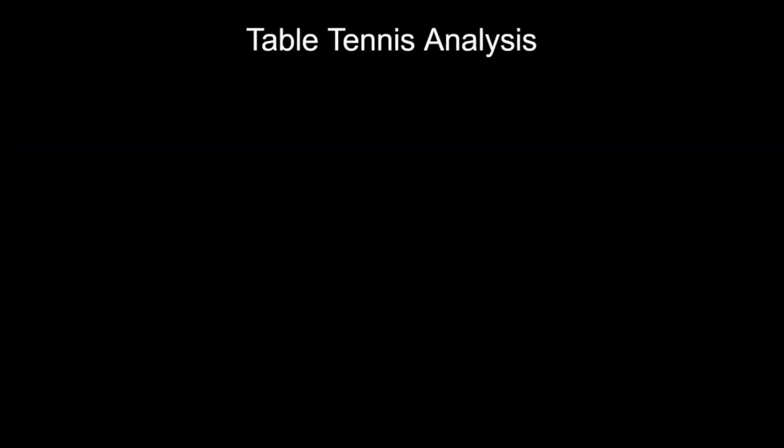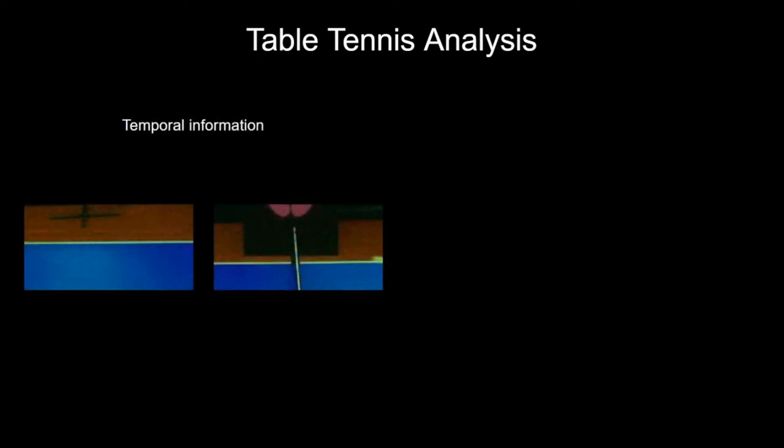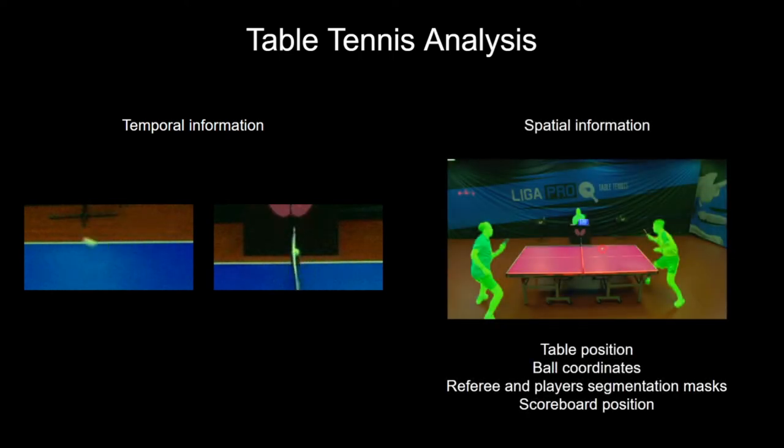Full analysis of table tennis requires two types of information to be gathered. Temporal information, providing data about in-game events like ball bounces and net hits, and spatial information about table and scoreboard positions, ball coordinates, and person masks for correct application of game rules by auto-referee system.